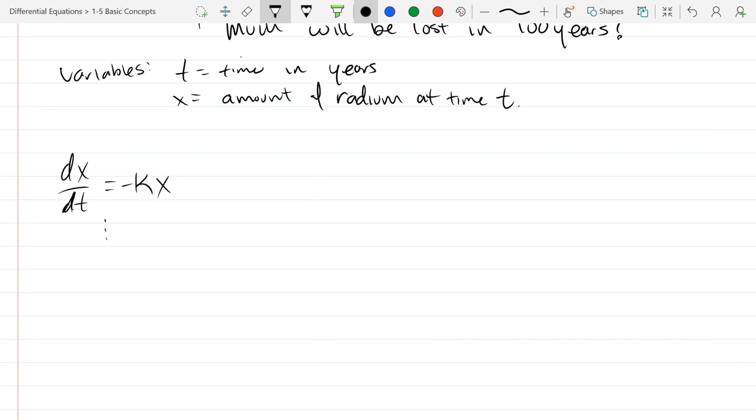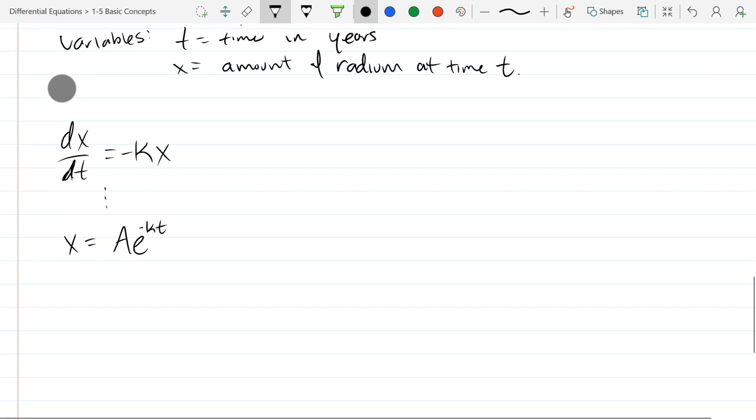And we do everything we did before. We'll get x equals a*e^(-kt). So those three dots are everything we did yesterday.